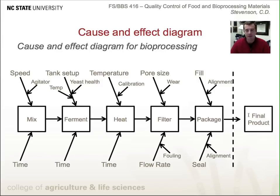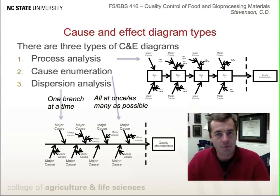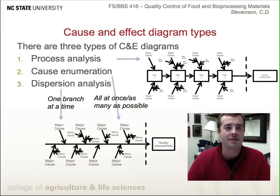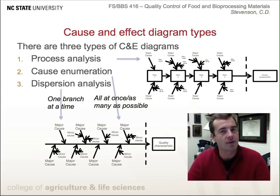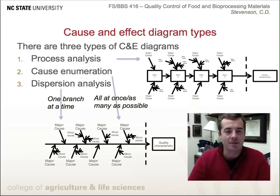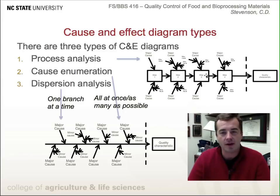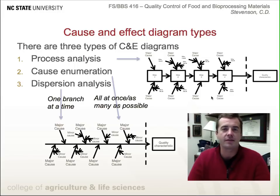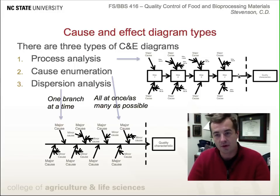There are actually three different types of cause and effect diagrams. The first type is process analysis, where different steps in a process lead to the final product. For each step, we identify major and minor causes that might lead to some sort of effect.